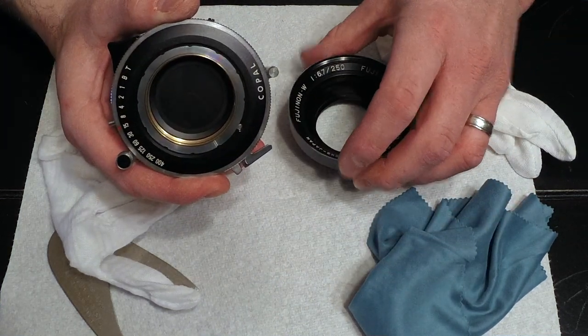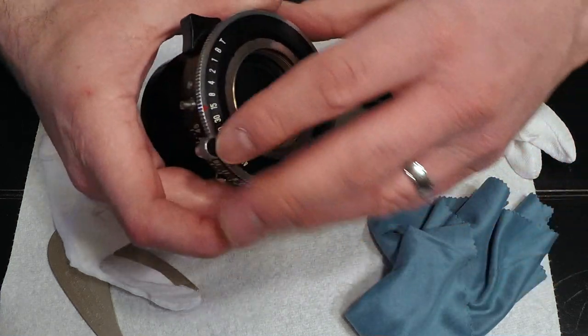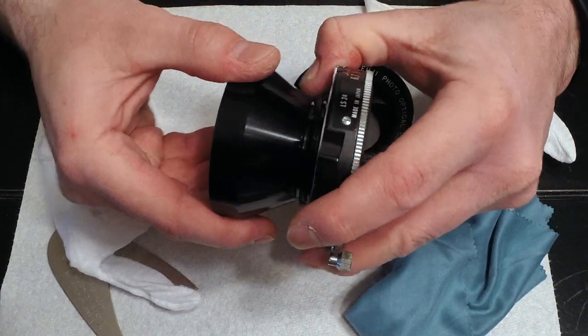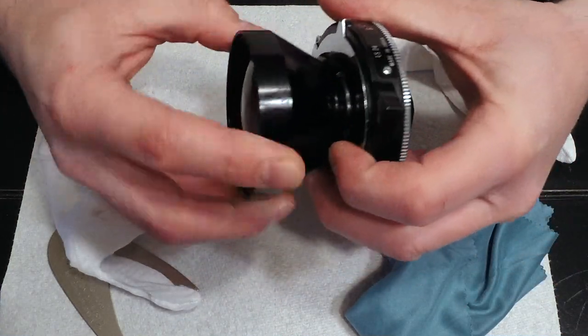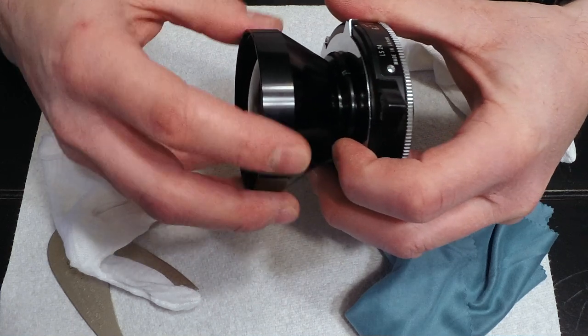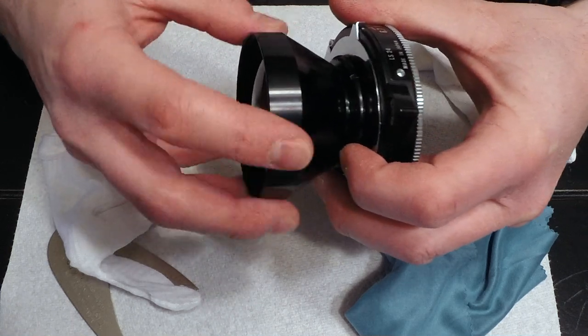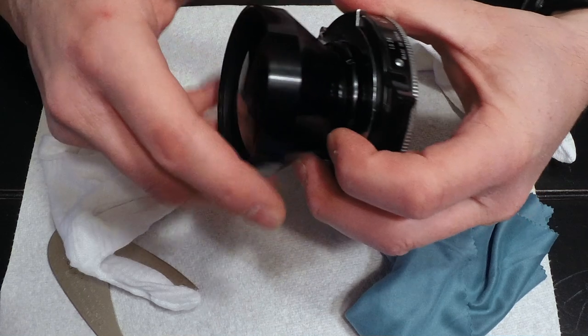Not all lenses have spacers, but I've learned from experience that a spacer can just fall out. This particular lens has no spacer on the front element, so that's good. I've just got a clean paper towel down here.